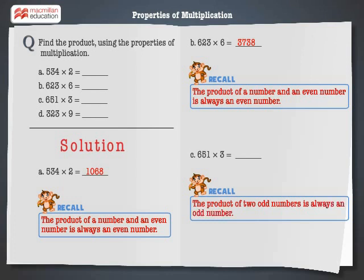651 multiplied by 3 is equal to 1,953. Finally, let's solve the last problem.